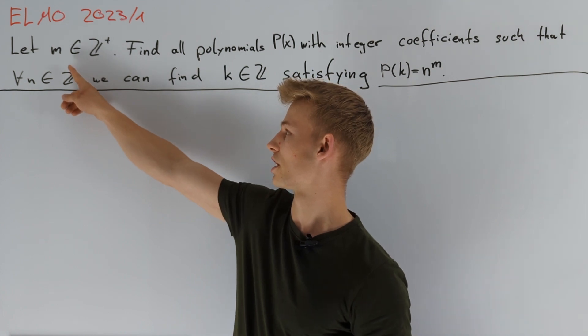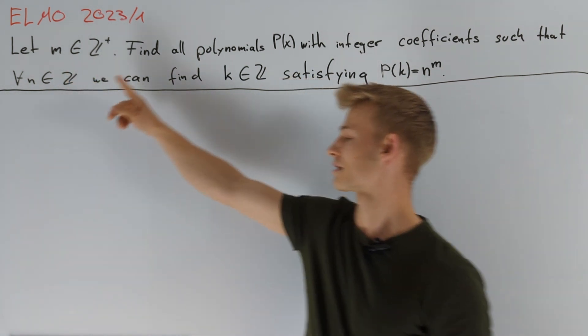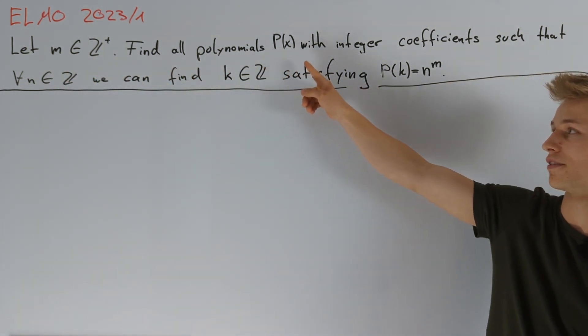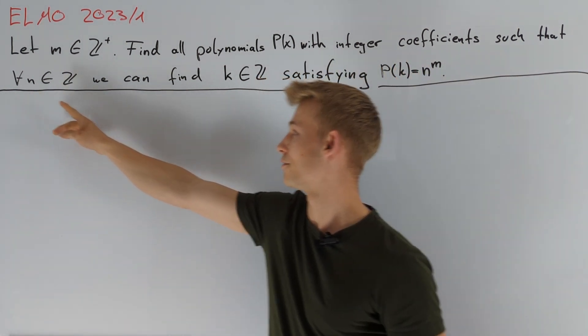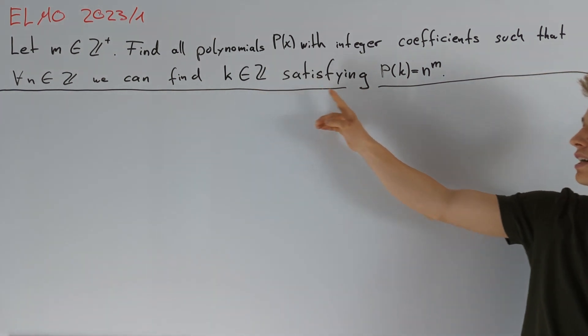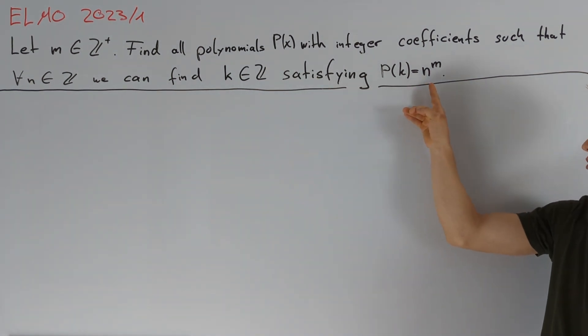We have given a positive integer m. Now we are asked to find all polynomials P(x) with integer coefficients such that for every integer n we can find an integer k satisfying P(k) equals n to the power of m.